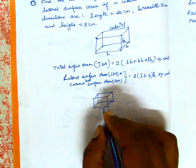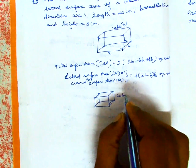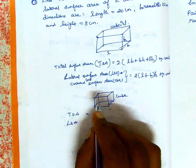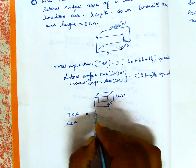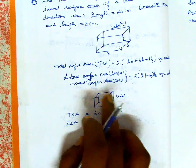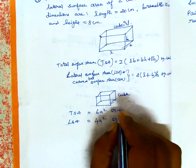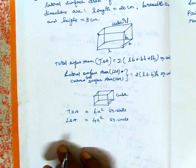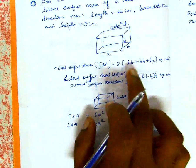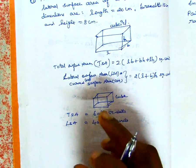For a cube, all sides are equal. TSA of a cube means calculating all 6 sides, so TSA equals 6A square units. LSA of a cube uses the 4 side faces, so LSA equals 4A square units. These formulas are easy to remember.